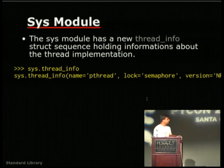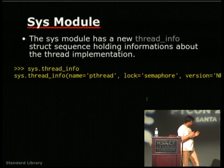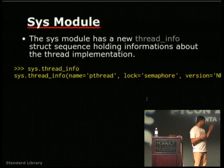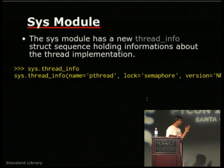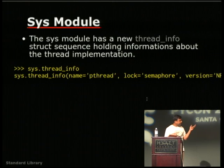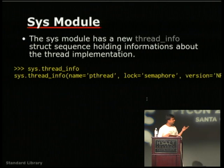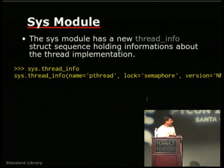The sys module has a new keyword argument thread_info — a named tuple which provides information about what kind of threading your Python interpreter has, such as the pthread type, what kind of locking is used, and the version.